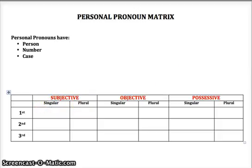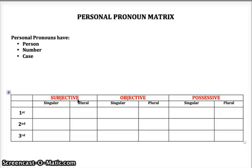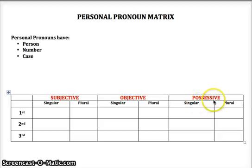The third characteristic of personal pronouns is that they have case. There are three different cases. The first is the subjective case, used when the pronoun is the subject of the sentence. The second is the objective case, used when the pronoun is an object — either a direct object, an indirect object, or an object of the preposition. The last case is possessive case, used to show ownership.